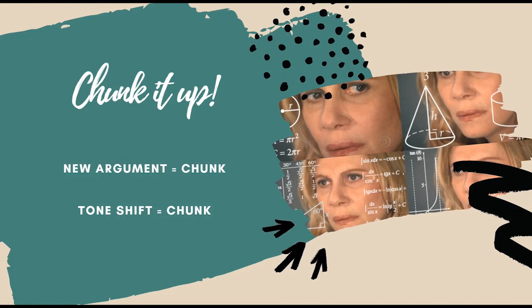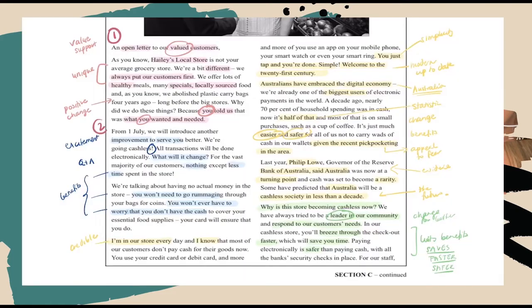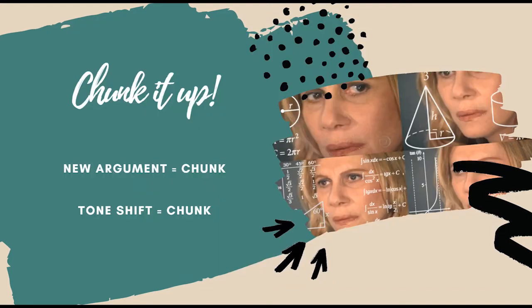Once we've moved on from that, it's time to chunk the article. This stage allows you to visually unpack the structure of the article and also works as a plan for your essay. You should chunk where you have numbered your arguments in the CATFLAP stage, or where there is a tonal shift. This allows you to see the overall structure and effect of the article.